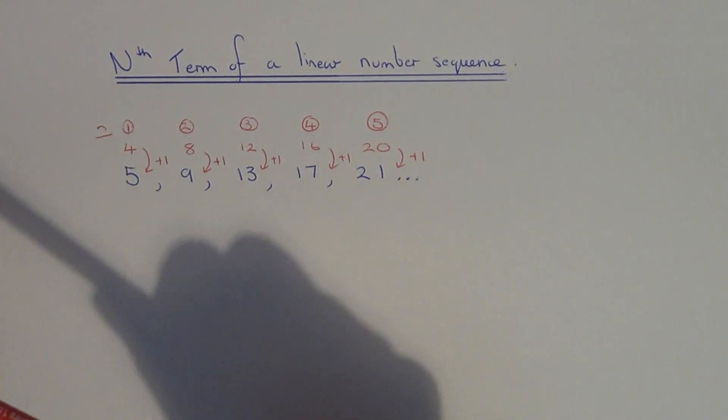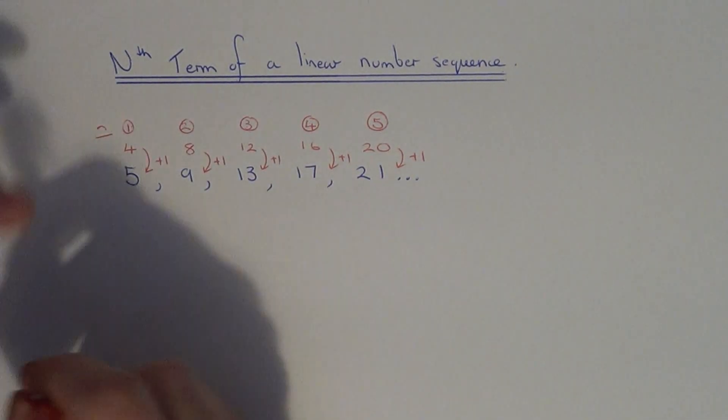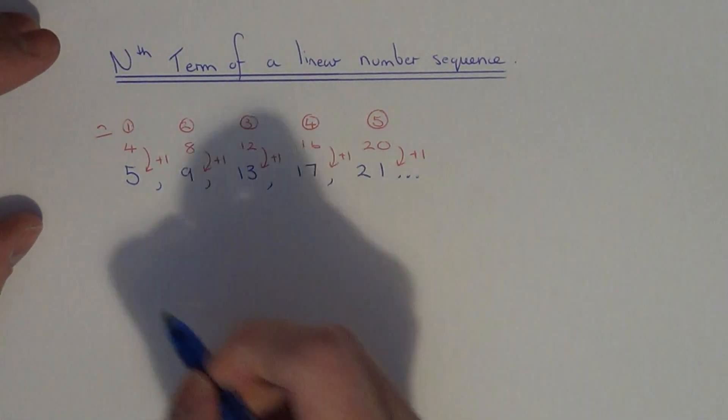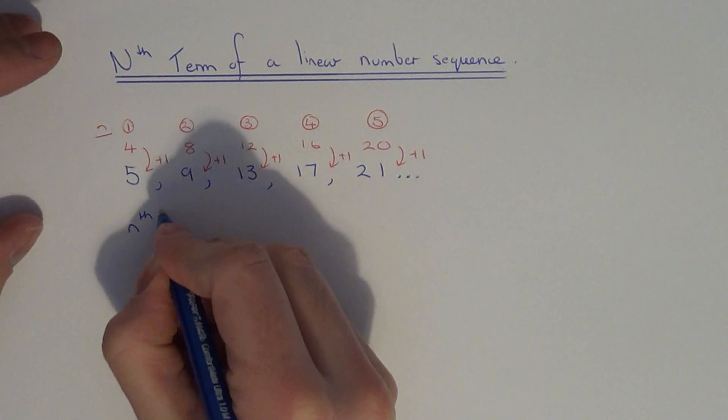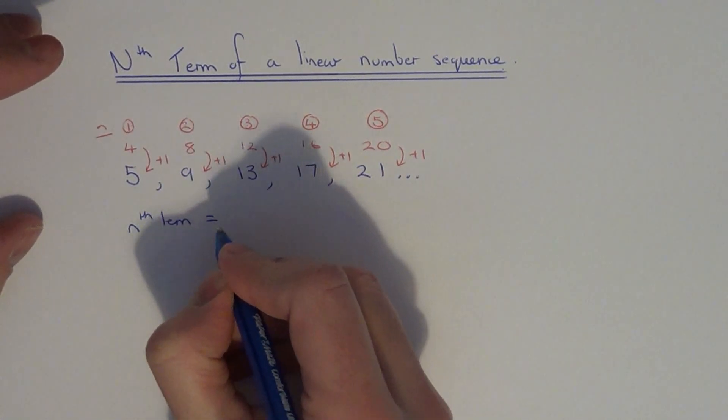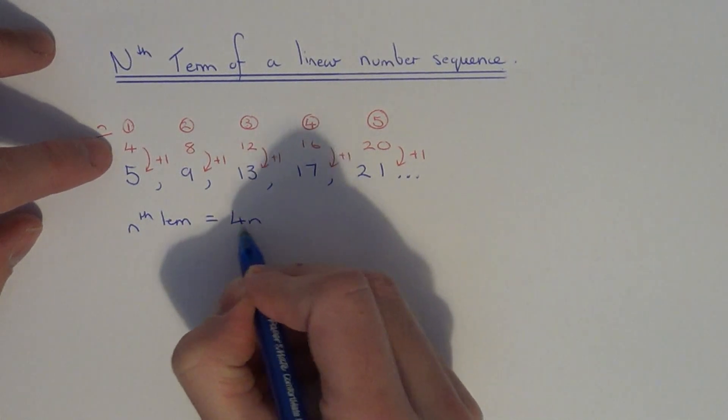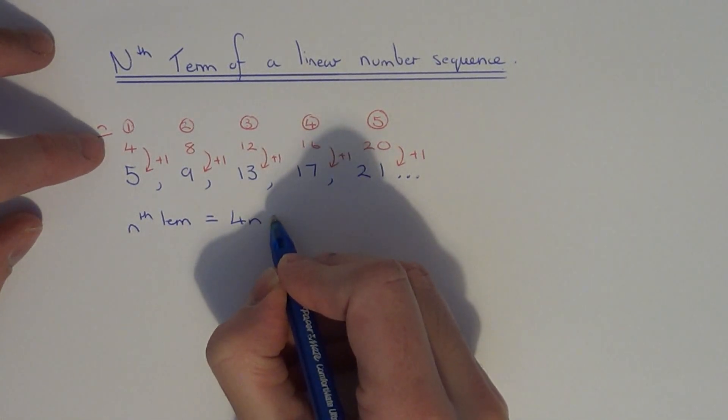So what we did was multiply the position numbers at the top by 4 and then we added on 1, and that will give you the numbers in the sequence. So the nth term will be equal to 4n because we times the numbers at the top by 4 and then we added on 1.